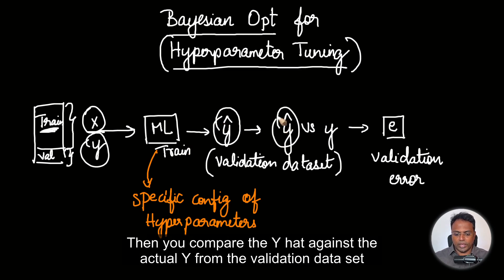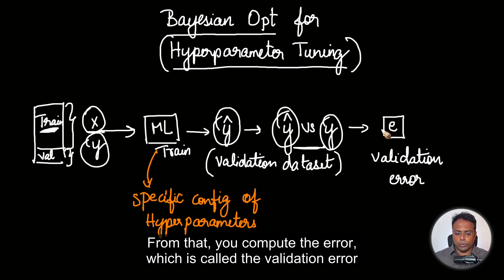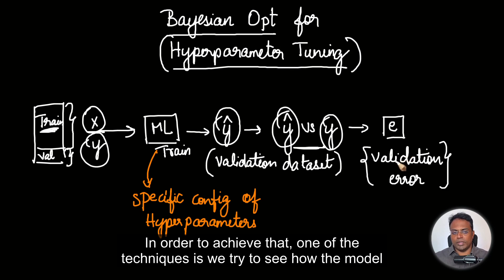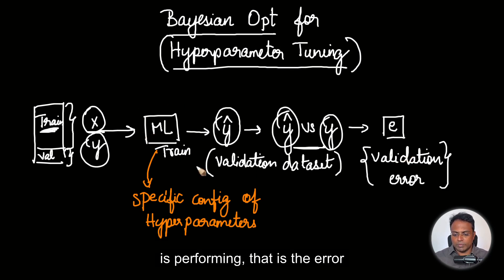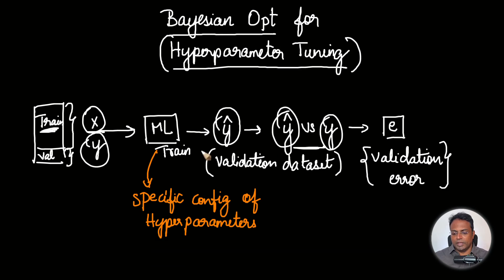Then you compare the Y hat against the actual Y from the validation dataset. From that you compute the error, which is called the validation error. We want this error to be as low as possible. In order to achieve that, one of the techniques is we try to see how the model is performing — that is the error. Lower the error, better the performance.